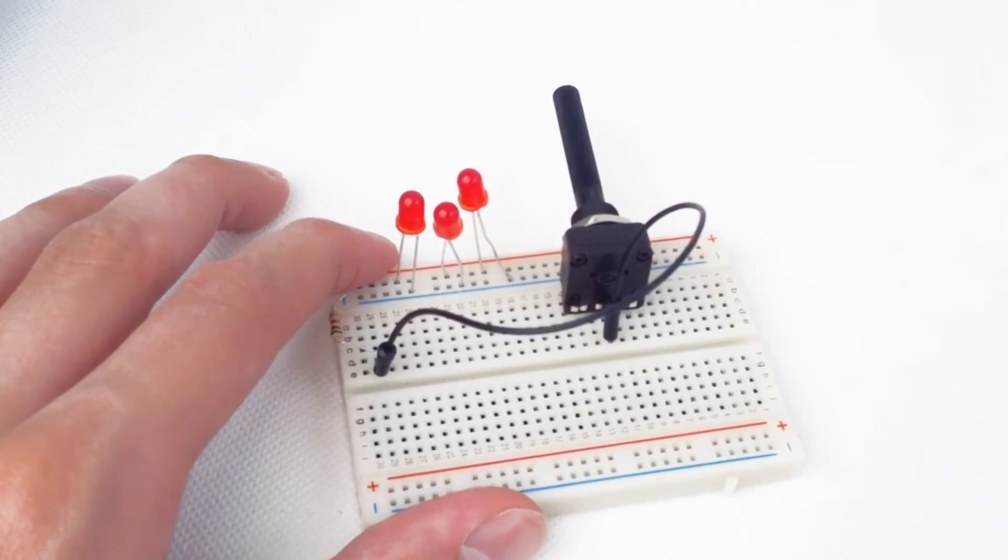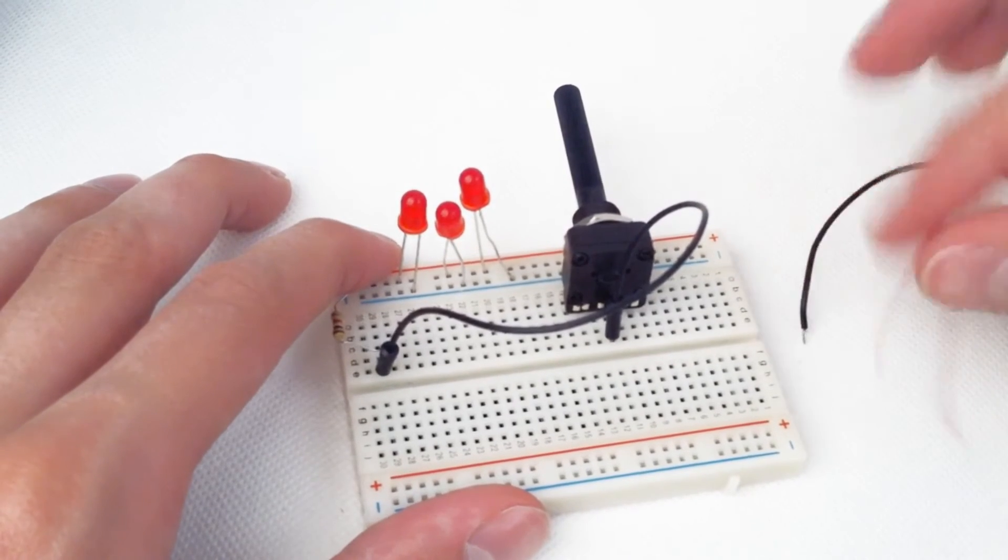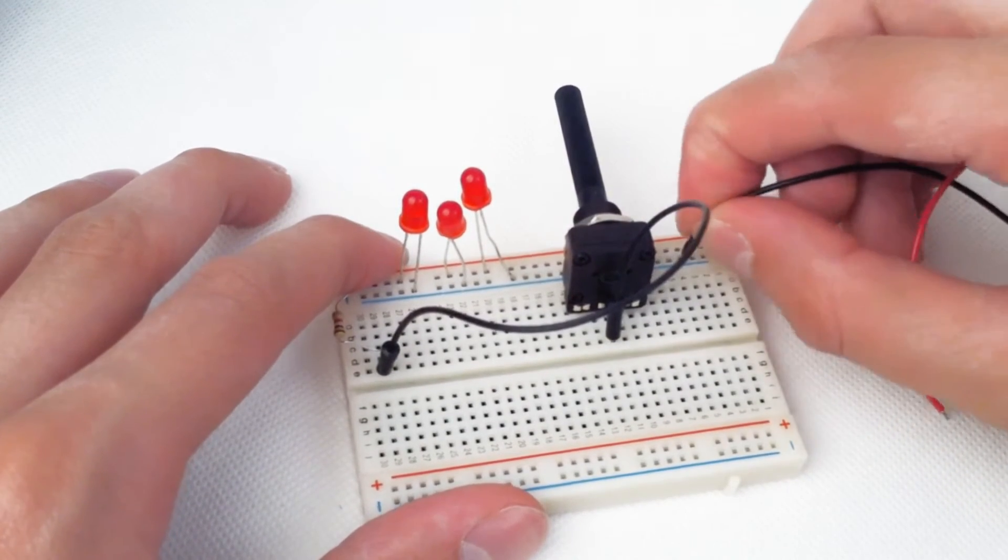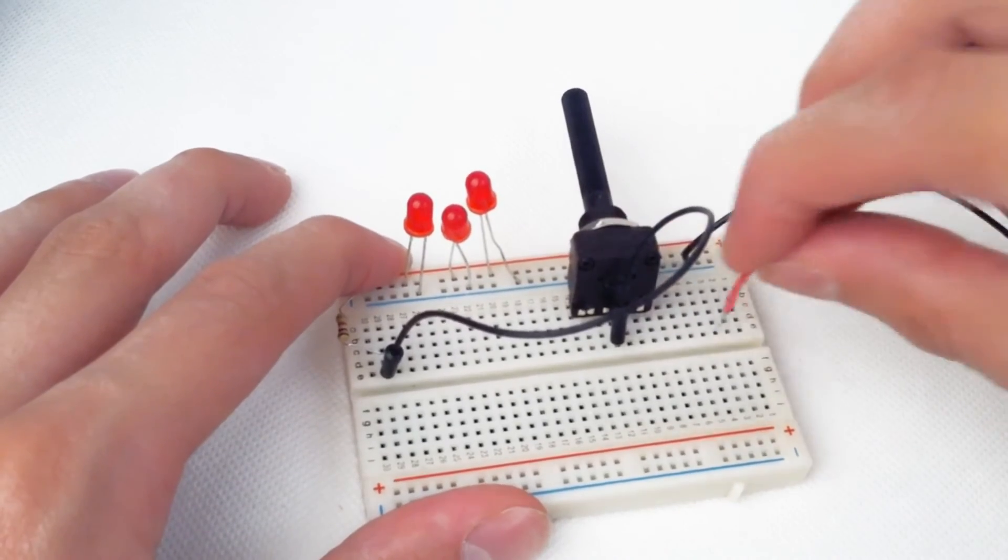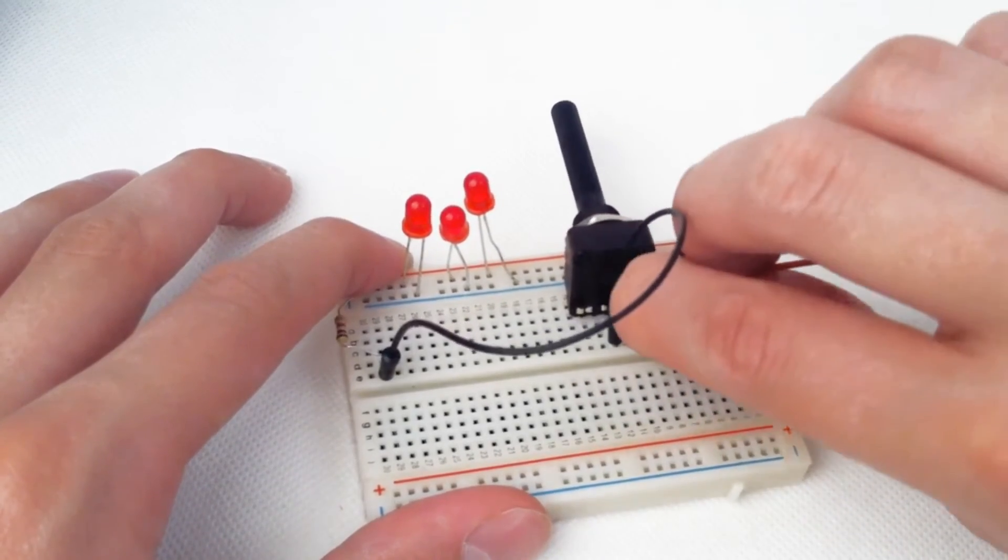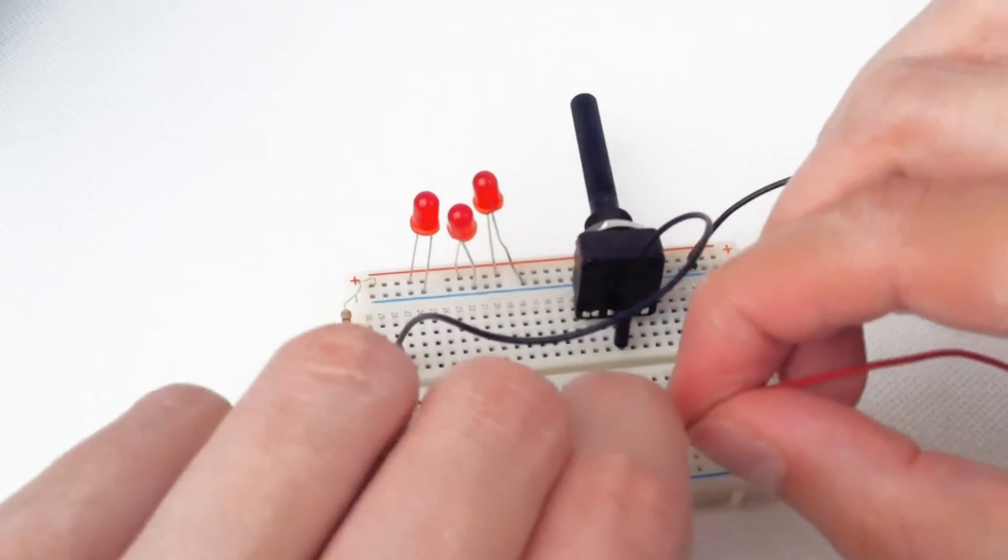I'll connect our power source, the black negative terminal here, and the positive terminal to the end terminal of our potentiometer. Make sure it's flat.